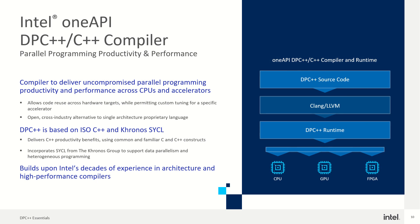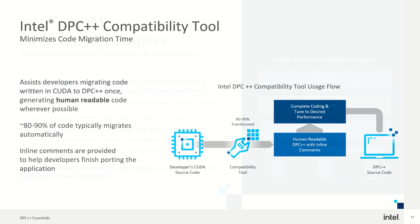We have the Intel OneAPI DPC++ and C++ compilers available, which will help you with compilation and provide uncompromised parallel programming productivity and performance across CPUs and accelerators. You can use any of the architectures across different CPUs and accelerators without taking a performance hit. DPC++ is based on ISO C++ and Khronos SYCL, and uses the same familiar constructs with data parallelism on top.